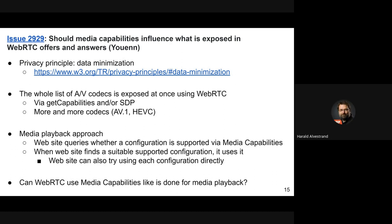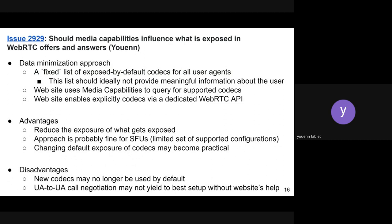We don't expose everything that's implemented, but the only API that works for enabling those not in the default set is hacking the local description, which is a sad way of doing things. The original goal of get capabilities was to expose everything supported, and it's an old API we wanted to deprecate. The question is whether we could use media capabilities in WebRTC like it's done in media playback. A user agent like Safari has a fixed list of exposed-by-default codecs — AV1 is not exposed in all Safari versions, so it's a fingerprinting issue. The website would need to use media capabilities to query for AV1 WebRTC support and then enable it via API.